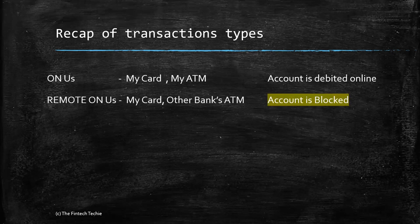The second type is the remote owner's transaction, which means the bank's card but used in another bank's ATM. In some cases, the account is blocked online real-time, or the account is debited online — either of these two scenarios.